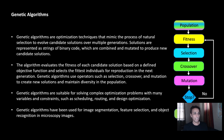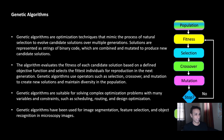Where are genetic algorithms useful? They can be useful with many variables and constraints — like scheduling, routing, and design optimization. For image processing, I haven't personally found the need, but a literature survey shows people have experimented with image segmentation. Feature selection is a good example where genetic algorithms can be very useful, and they've been used in object recognition, though I tend to use deep learning approaches for that.